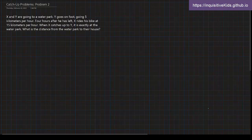Problem two. X and Y are going to a water park. Y goes on foot going five kilometers per hour. Four hours after he has left, X rides his bike at 15 kilometers per hour. When X catches up to Y, it is exactly at the water park.